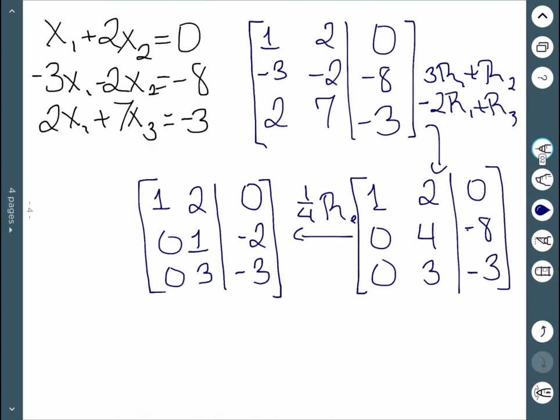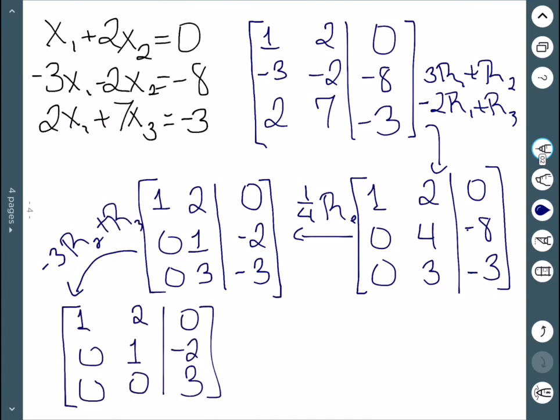The final step is to turn the 3 into a 0. And in order to do that, we would do negative 3 row 2 plus row 3. And when we do, here's the result.